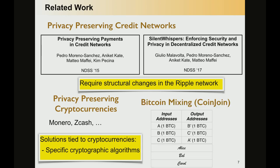The most promising approach in terms of compatibility is Bitcoin mixing in terms of CoinJoin. The idea is that we have a transaction with several senders and several receivers, and only when all the senders accept the transaction are the coins automatically sent from the senders to the receivers. In that manner, we cannot figure out which input address pays to which output address.